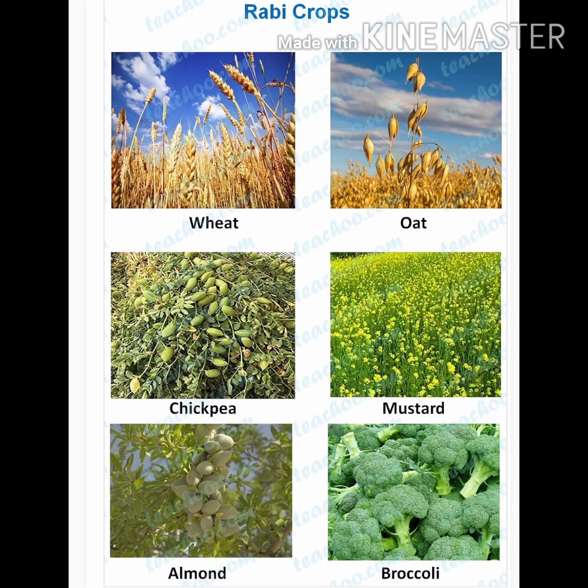These are the Rabi crops. Wheat grows in dry climate. It grows in Punjab, Haryana, Uttar Pradesh, Rajasthan, Bihar, and Madhya Pradesh. The northern plains of India are called the wheat bowl of India.